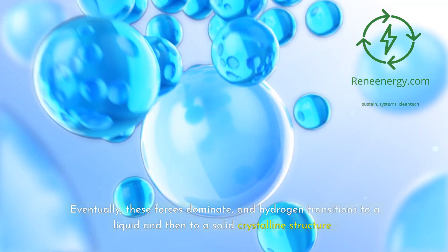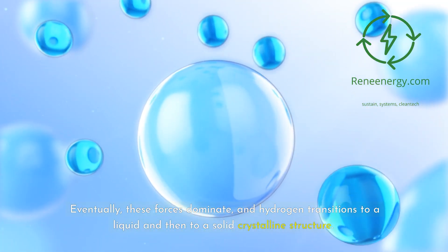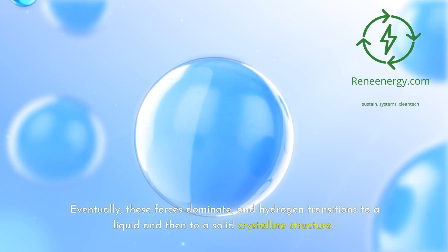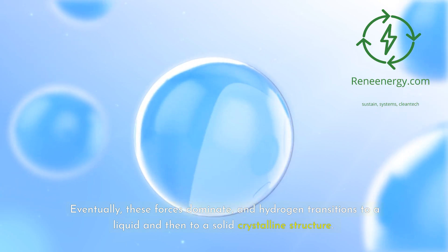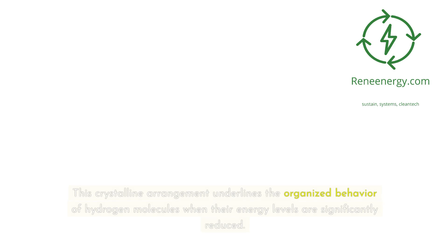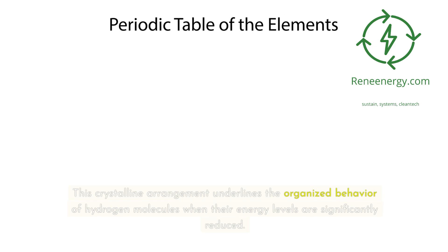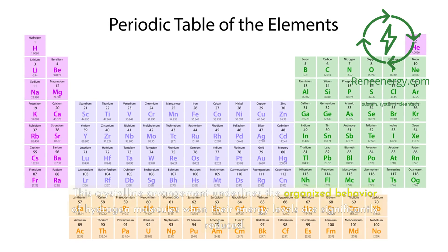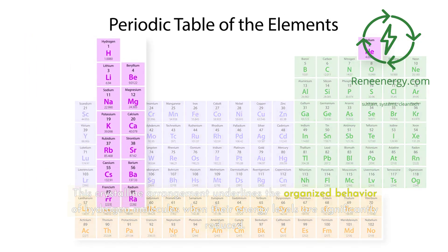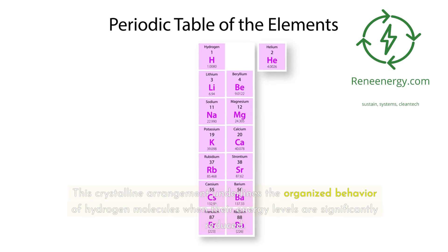Eventually, these forces dominate, and hydrogen transitions to a liquid and then to a solid crystalline structure. This crystalline arrangement underlines the organized behavior of hydrogen molecules when their energy levels are significantly reduced.